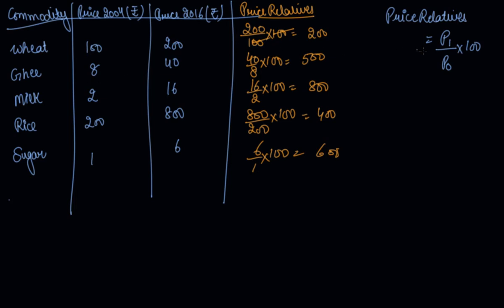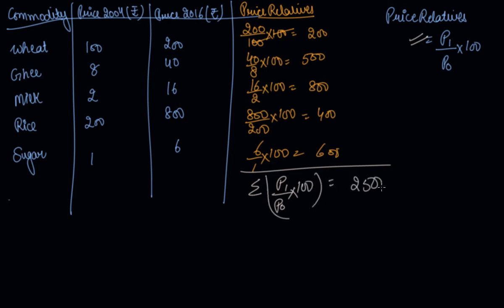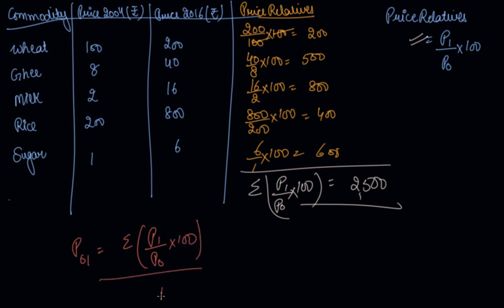Now that you have found the price relatives of all the commodities, you add them together to get 2500. The formula for the price index number is: submission of price relatives divided by N, the number of goods. So 2500 divided by 5 — since there are 5 goods — equals 500, which is your price index number.